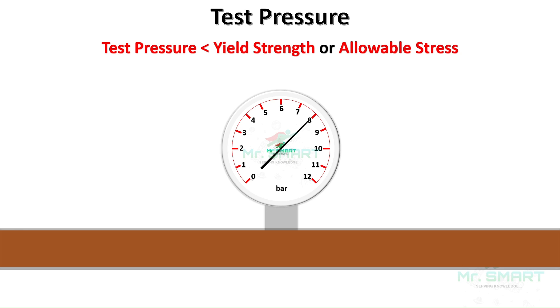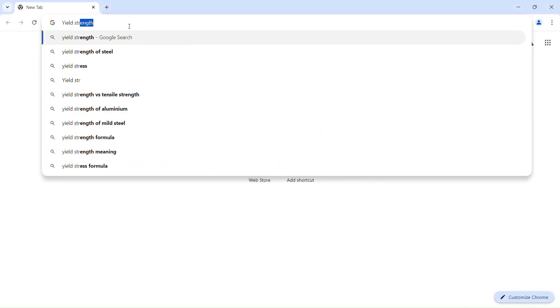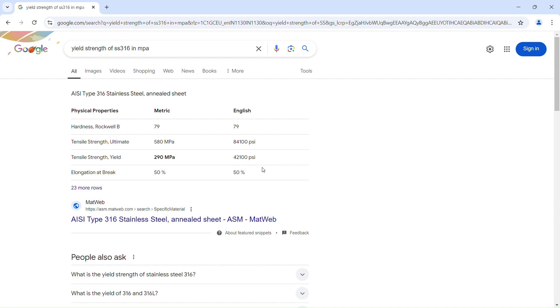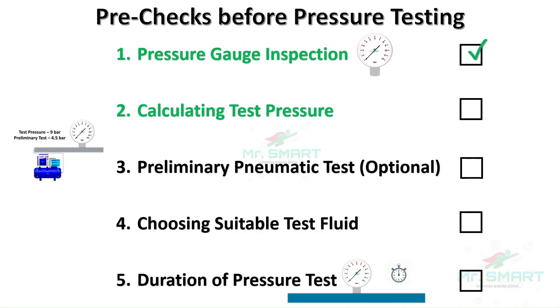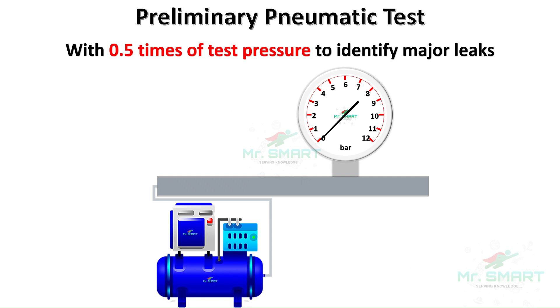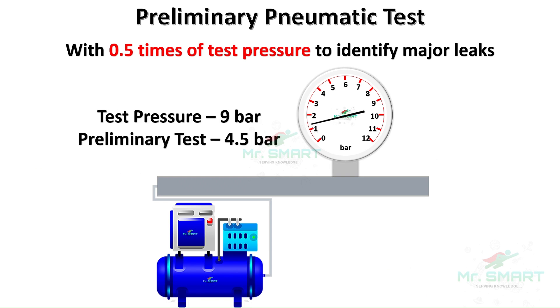ASME B31 piping code has yield strength data for various materials and alloys — refer to them at the design stage. For standard materials, the yield strength can be found by Googling the yield strength of your pipeline material in whatever unit you need, and make sure your calculated test pressure is less than that. Once you have the test pressure, it is recommended to conduct a preliminary pneumatic test at 0.5 times the final testing pressure. This initial test helps identify any major leaks early on, preventing a full-scale failure during the main test.